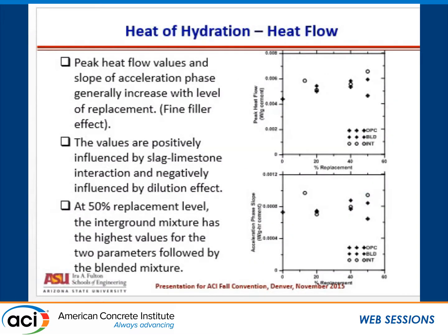To summarize the heat flow results from all three different categories — the binary blends represented by the plus sign, and the blended and interground systems — we plotted peak heat flow values as well as the acceleration slope values. Both generally increase with the level of replacement, which we attribute to a positive influence from the slag and limestone interaction. They are negatively influenced by the dilution effect since we are reducing the cement content, but overall the slag-limestone interaction dominates.